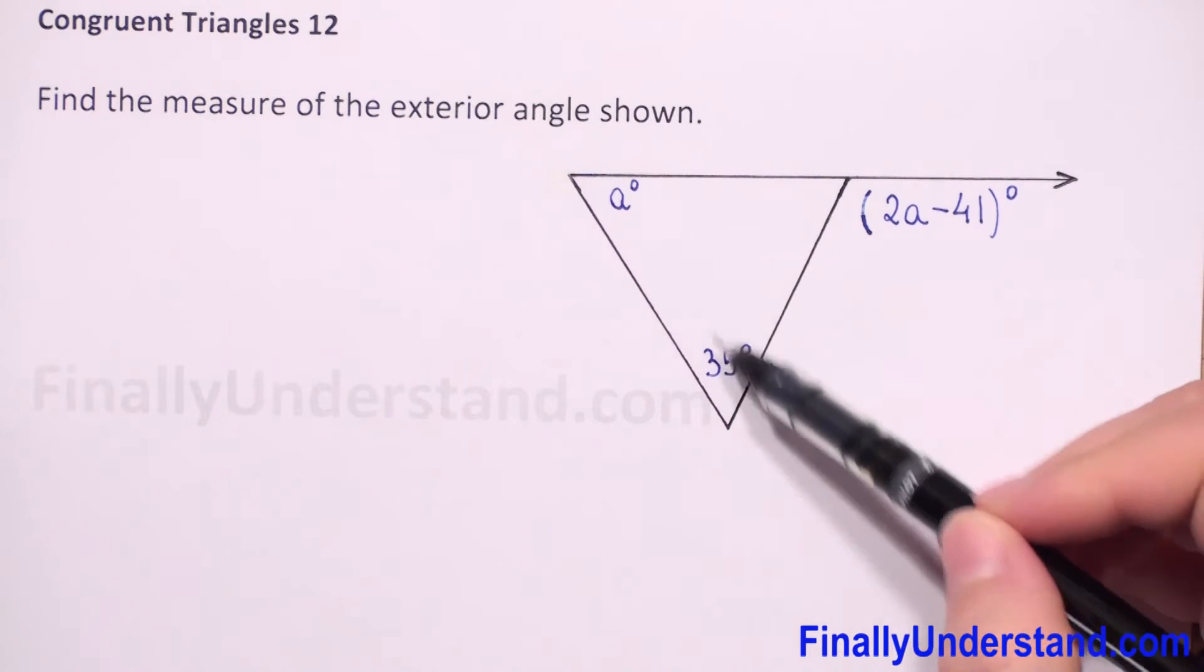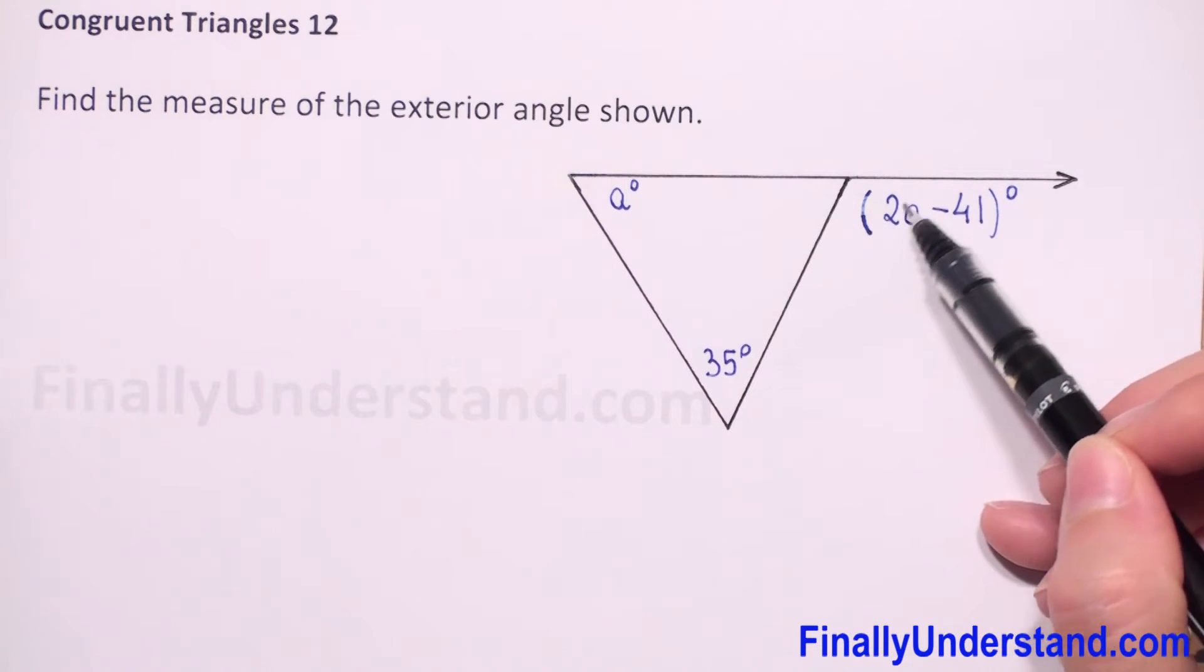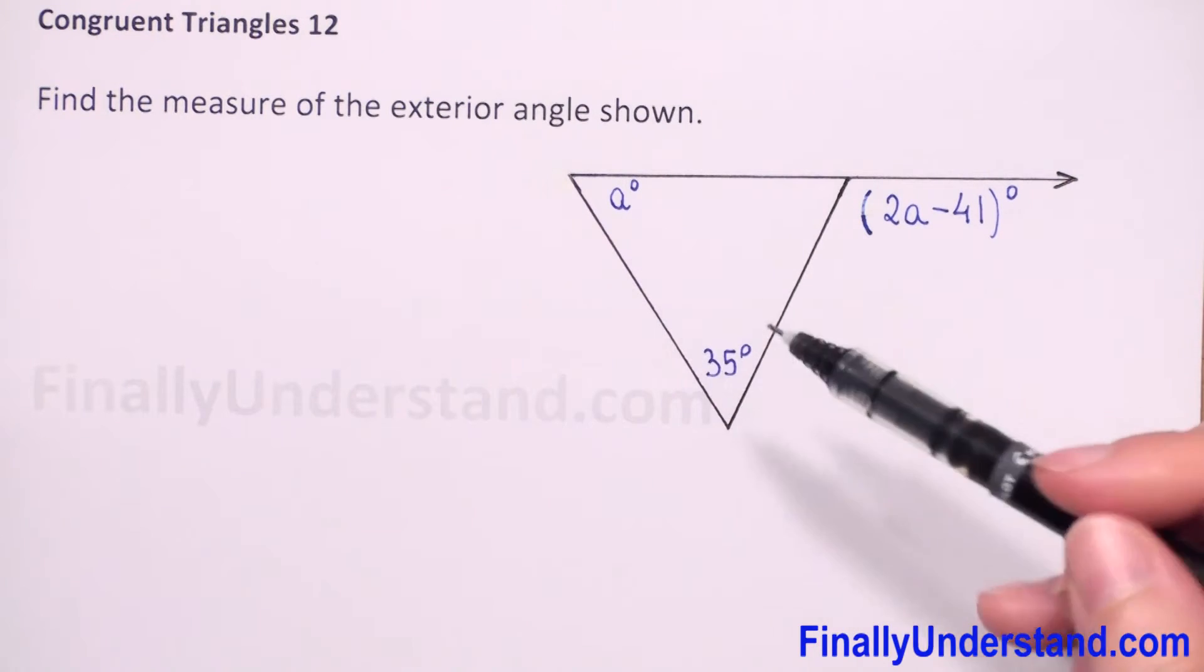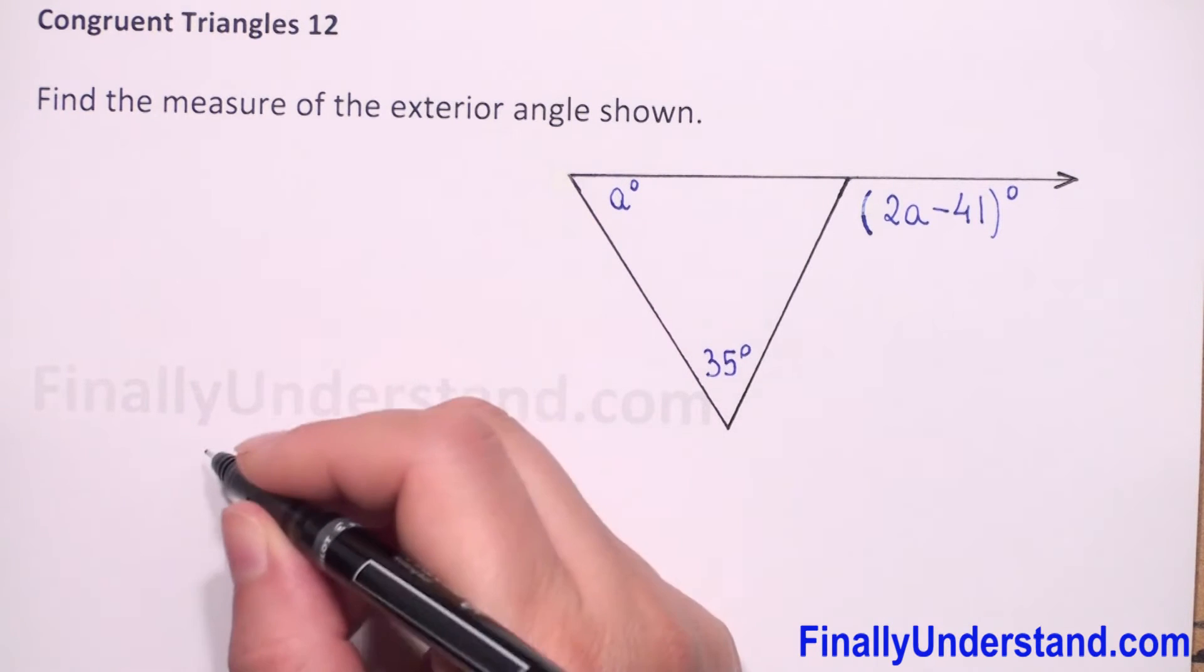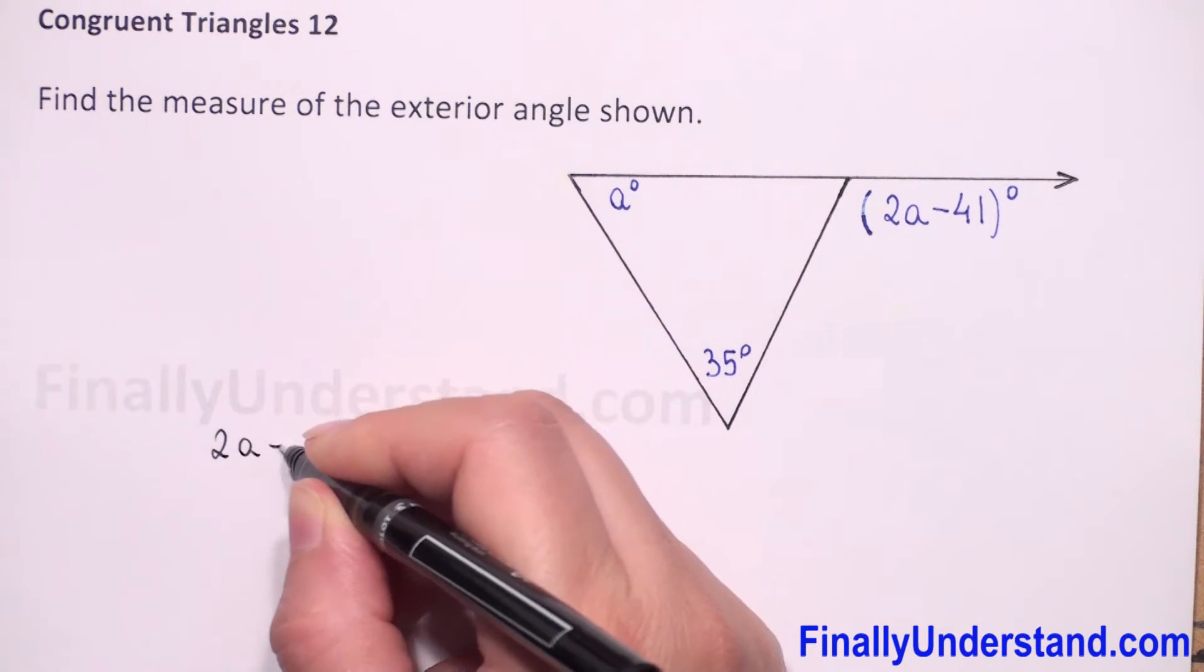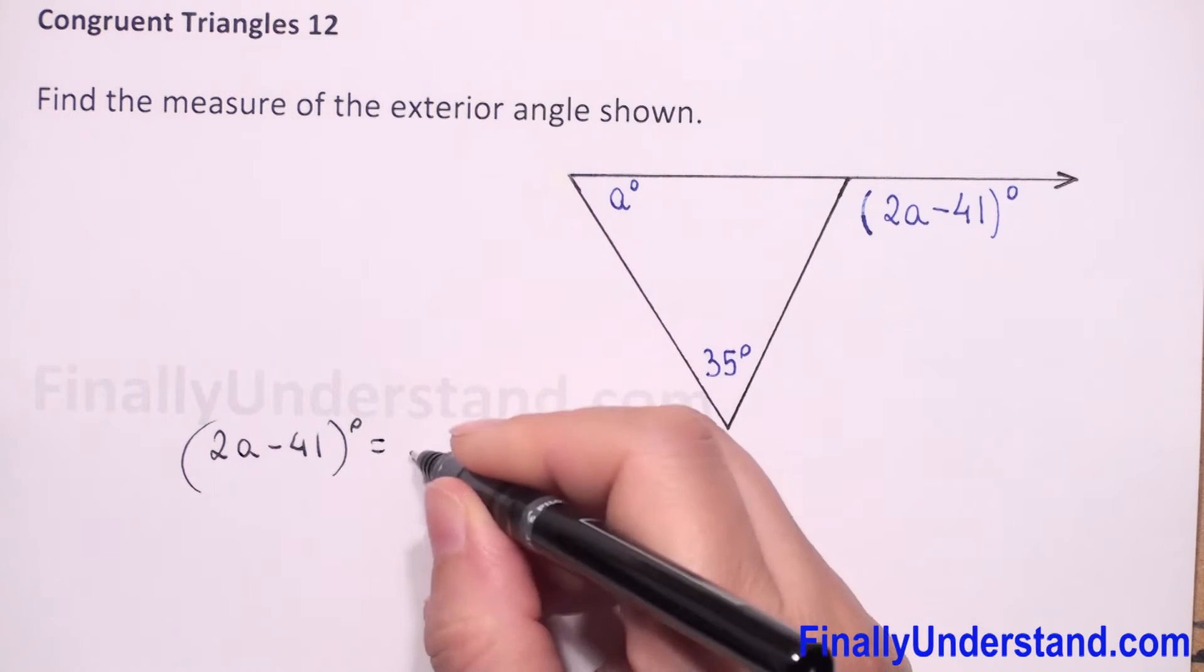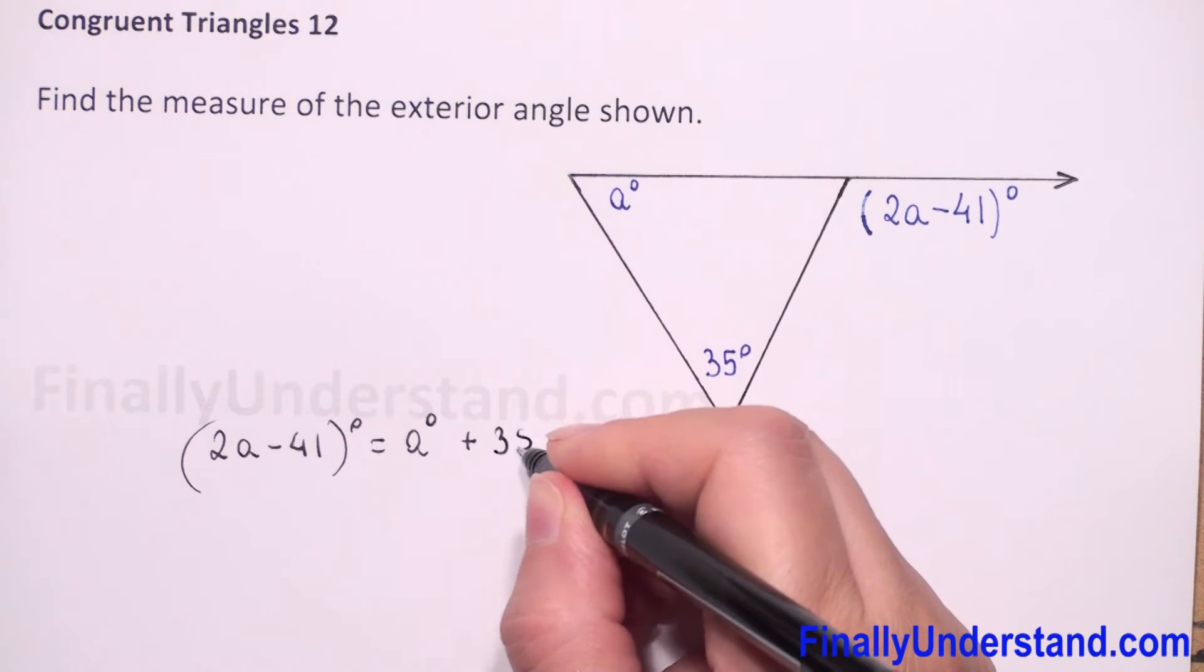We have these two non-adjacent interior angles, so the measure of this angle is equal to the sum of these two angles. So we can write the equation that 2a minus 41 degrees is equal to a degrees plus 35 degrees.